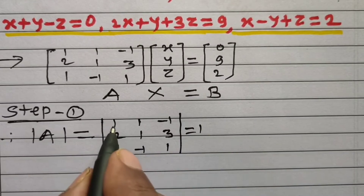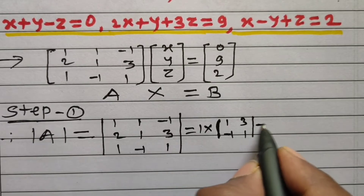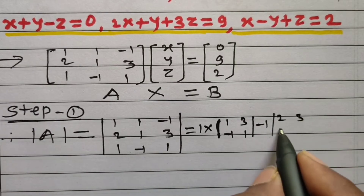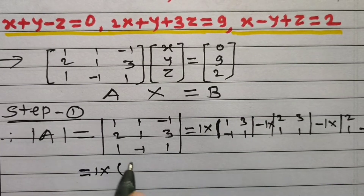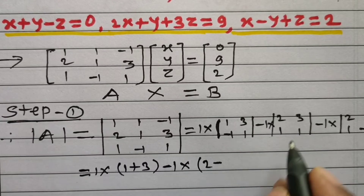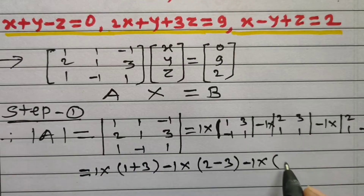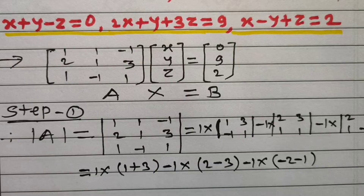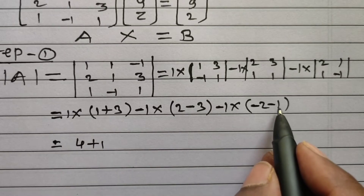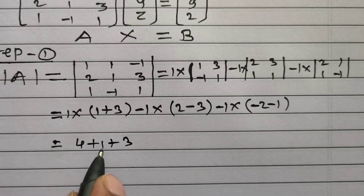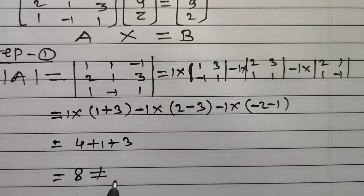Expanding along the first row: 1 into minor (1, 3; minus 1, 1), minus 1 into minor (2, 3; 1, 1), minus 1 into minor (2, 1; 1, minus 1). This gives 1 into (1 plus 3), minus 1 into (2 minus 3), minus 1 into (minus 2 minus 1). Simplifying: 1 times 4, plus 1, minus 1 times minus 3. Result: 4 plus 1 plus 3 equals 8. So the determinant value of matrix A is 8, which is not equal to 0. This implies A inverse exists, because this proves matrix A is a non-singular matrix.